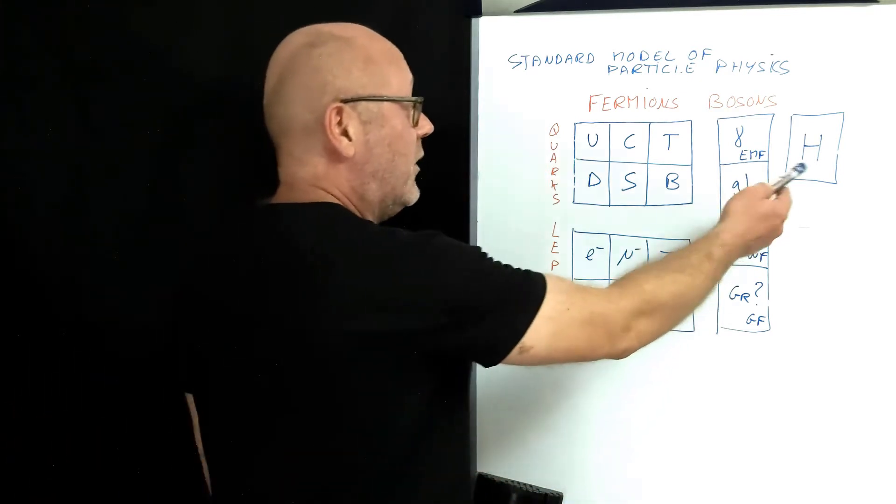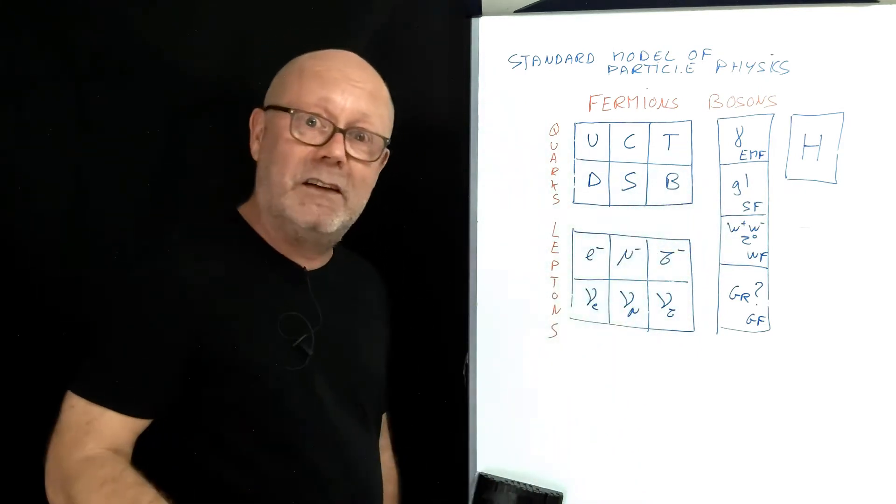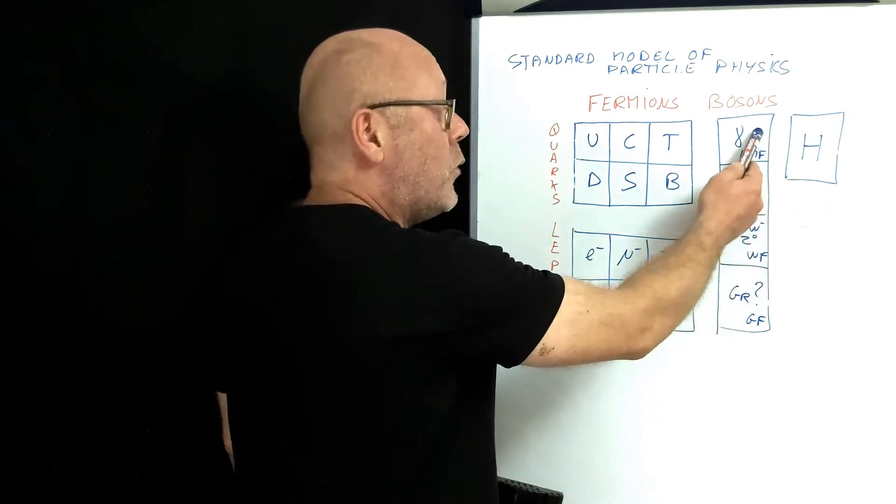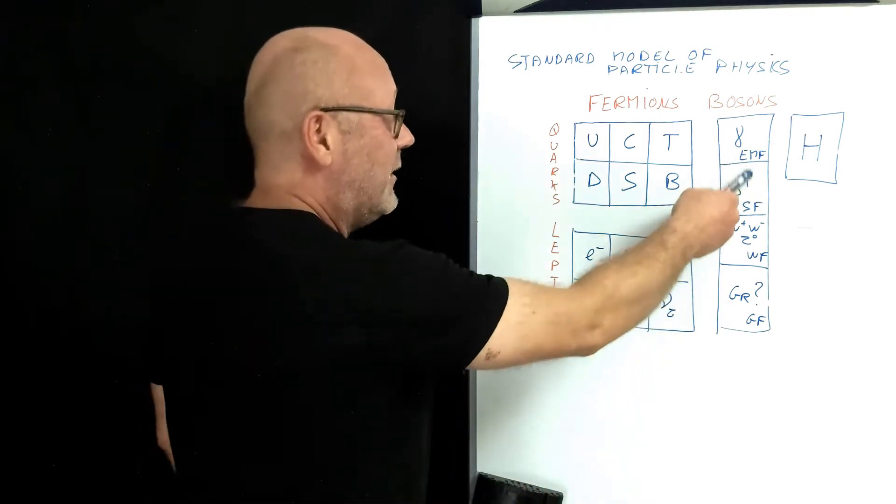For example, you can say that the Higgs boson interacts a lot with the top and bottom quarks. That's why these guys are very massive. But the Higgs boson doesn't interact neither with the photon nor the gluon. Therefore, the mass of these guys is zero.